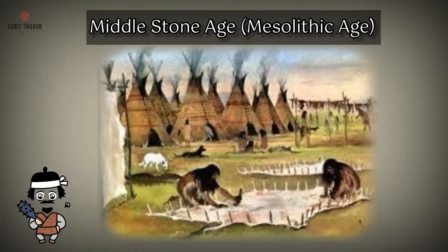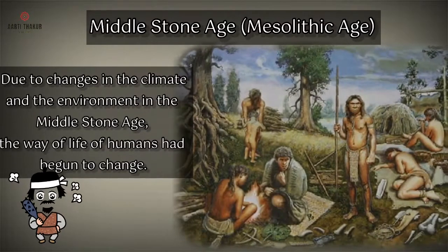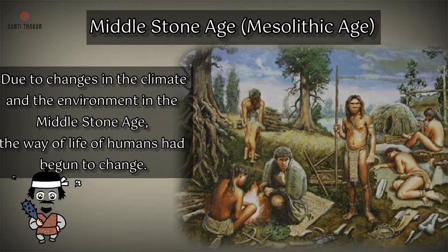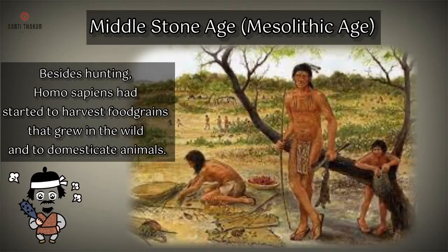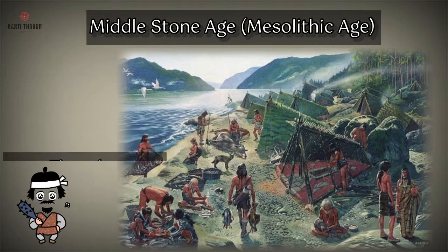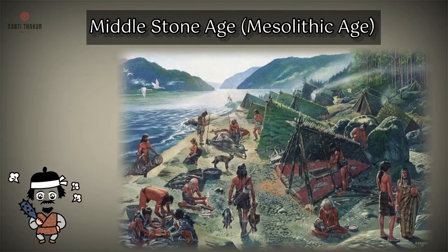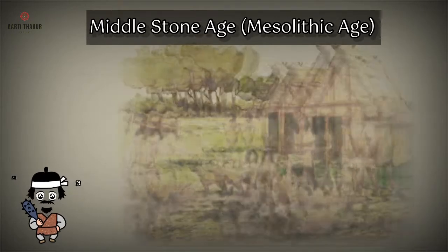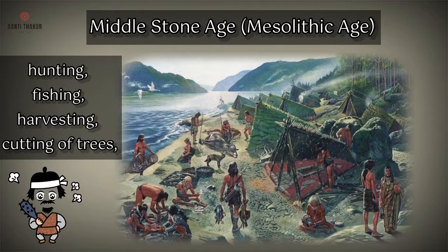Middle Stone Age — Mesolithic Age. They domesticated the dog. Due to changes in the climate and the environment in the middle stone age, the way of life of humans had begun to change. Besides hunting, Homo sapiens had started to harvest food grains that grew in the wild and to domesticate animals. Their diet now included various plant foods, and they also began to settle in one place for a part of the year. Domestication of sheep and goats also goes back to this period. It appears that Homo sapiens now needed several different types of tools that were light in weight and durable for a variety of tasks such as hunting, fishing, harvesting, cutting of trees, etc.